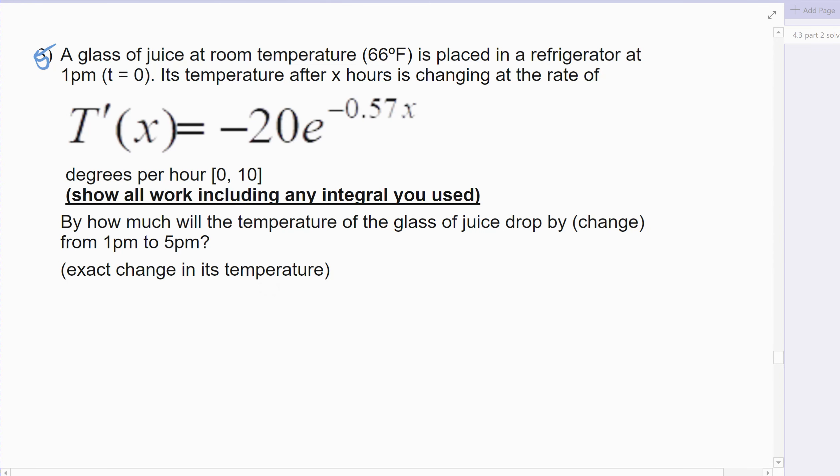Alright, the next example. Suppose that a glass of juice is at room temperature, and it's a cold room. Suppose the room temperature is 66 degrees Fahrenheit. It's placed in the refrigerator at 1 p.m. So that's time zero, and again, that's important to remember.